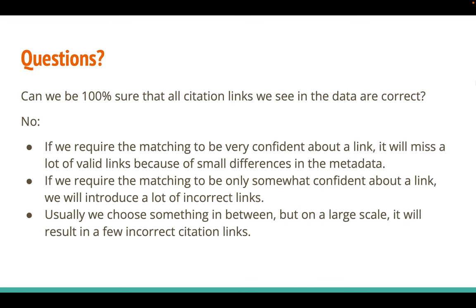So let's say the matcher inserts a link between a citation and a cited article. Can we be sure it is correct? Unfortunately, no. The matcher typically decides whether it is confident enough about a potential link. If we require the matcher to be very, very confident, we will only match cases where the metadata is almost identical and we will miss a lot of links because of small discrepancies. Conversely, if we do not require much confidence, we will get a lot of incorrect links. Typically, the cut-off point is somewhere in between and is decided based on data. Note that even if the fraction of incorrect links is very small, on a large scale there will still be a few such cases. Usually the matcher matched the citation to the wrong version of the article, to a book instead of a chapter, or something similar.